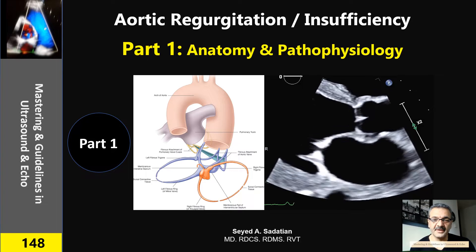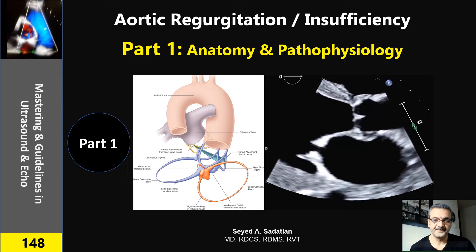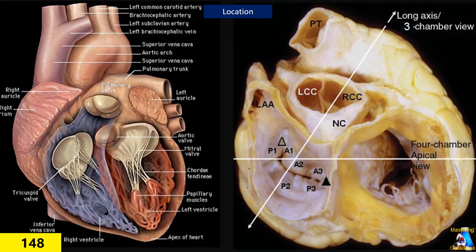Welcome to Mastering and Guideline in Ultrasound and ECHO. In this group of lectures, I'm going to talk about anatomy and pathophysiology of aortic regurgitation. In the second lecture, I'll talk about grading and echocardiographic evaluation, and in the third lecture, about evaluation of the artificial aortic valve.